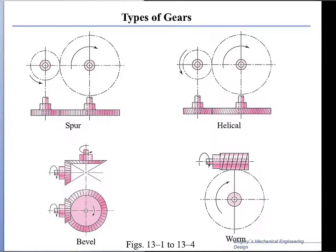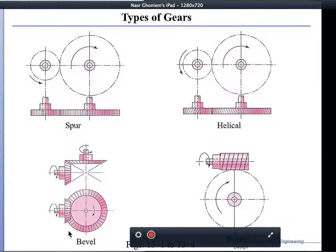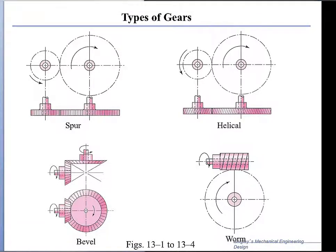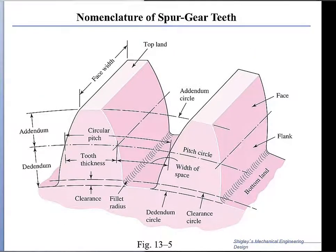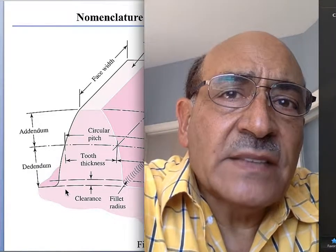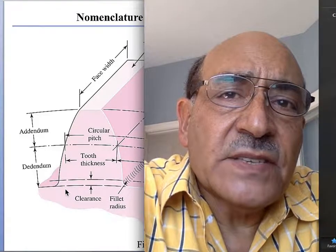For intersecting axes, we can also use a configuration called the worm gear. The worm gear has helical teeth and the axis of the gear intersects with the axis of the driven shaft. The worm is the driver and the driven shaft provides the output power. Now I want to show you some of the basic terminology in shaft design and the various characteristics of gears.